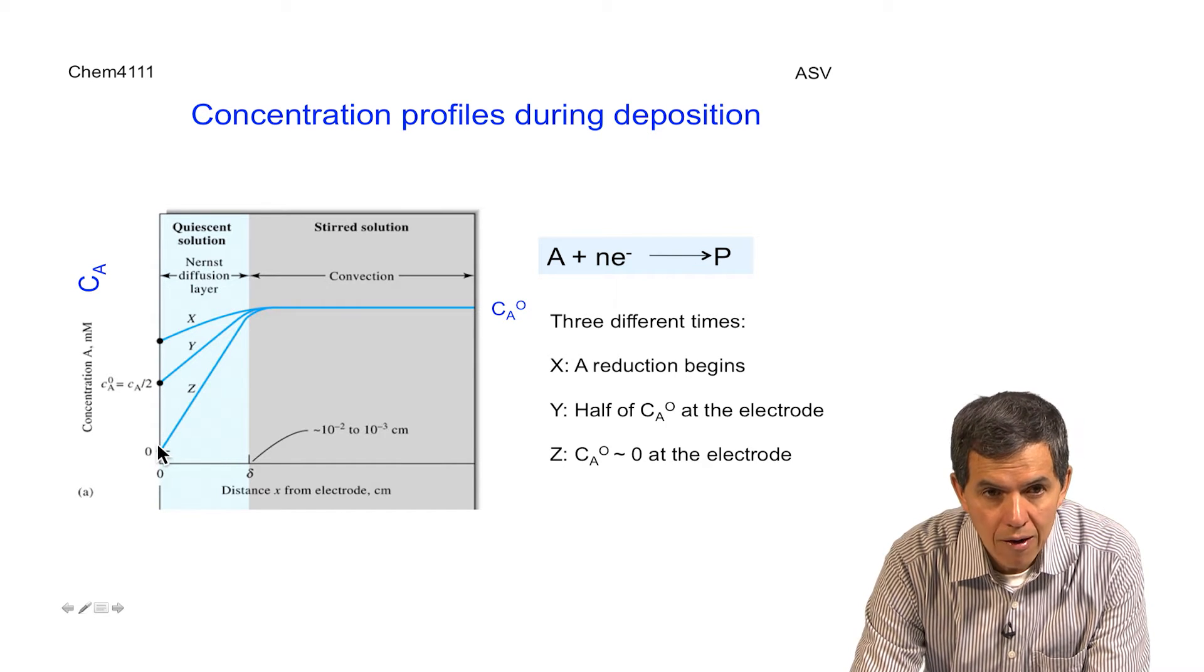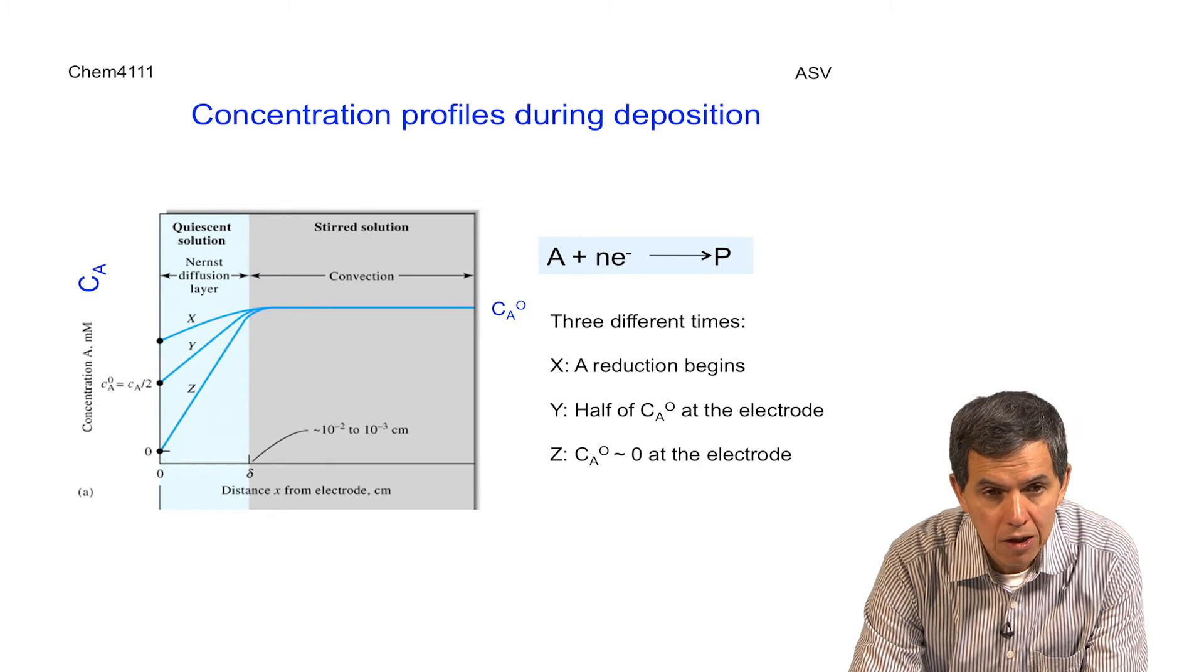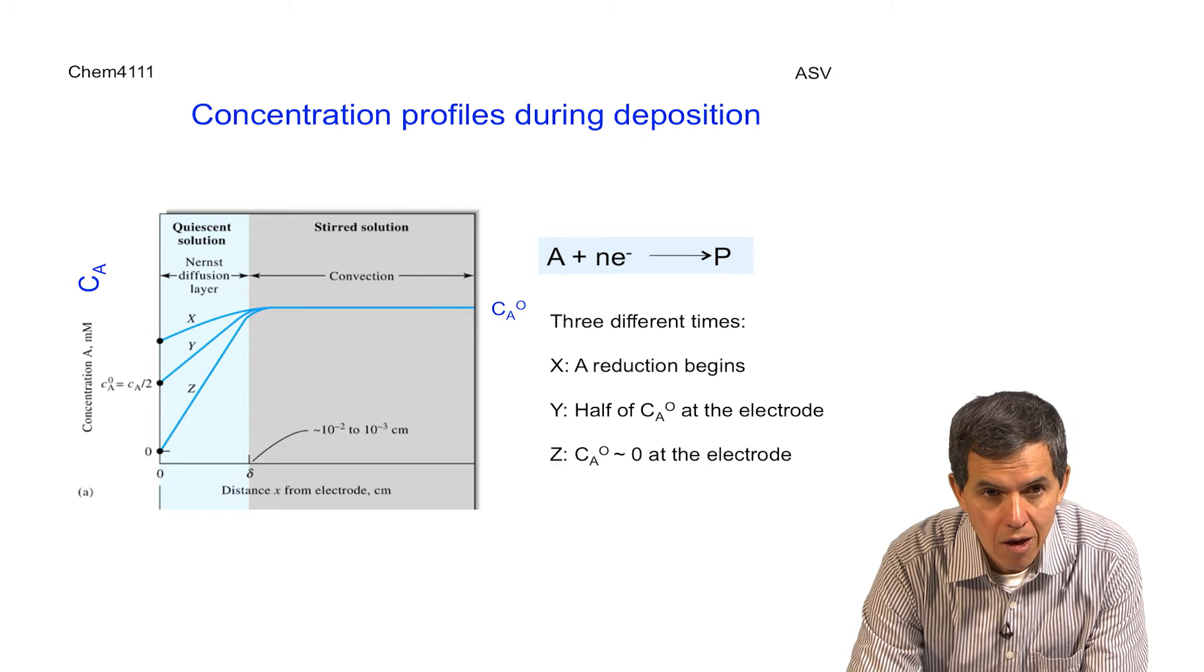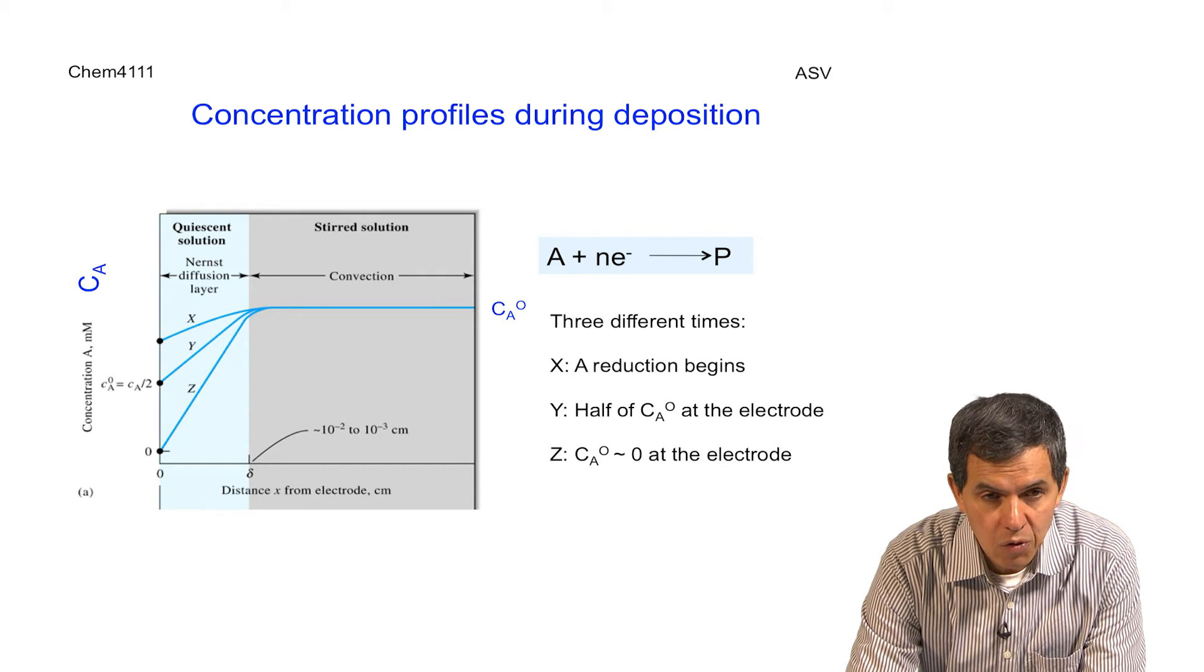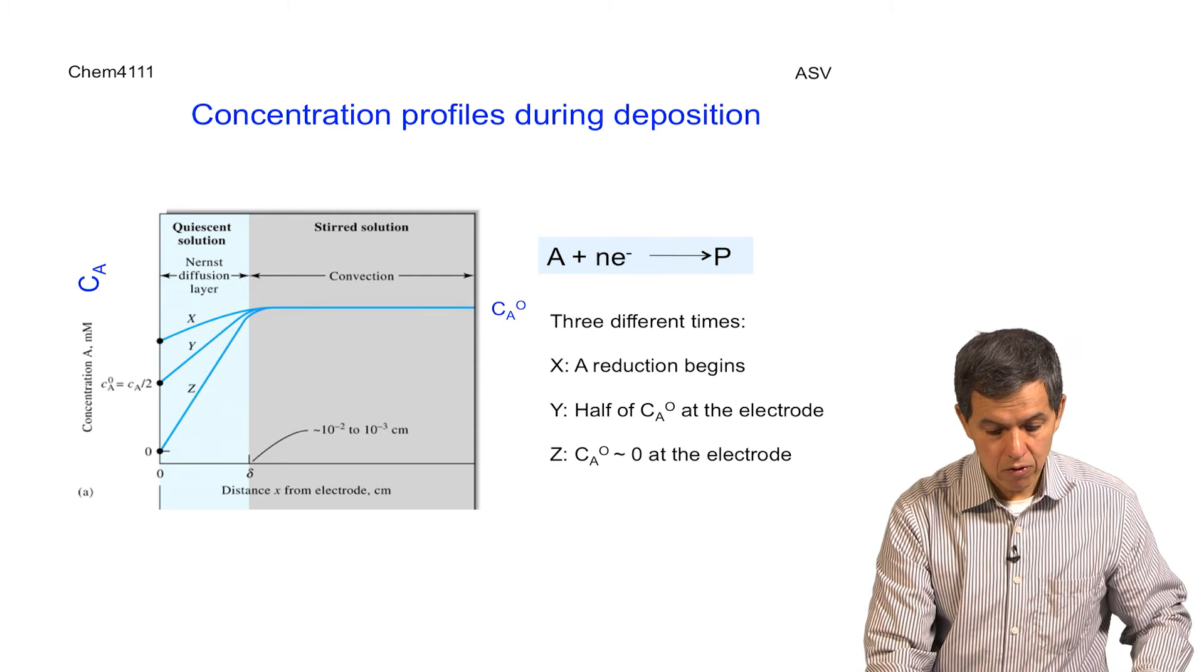The process described here happens extremely fast and is something that we normally don't notice during the ASV part because it happens just at the beginning. However, what we can see here is that as the oxidized species disappears, the reduced species will form on the surface of the electrode.